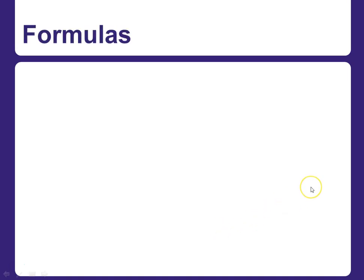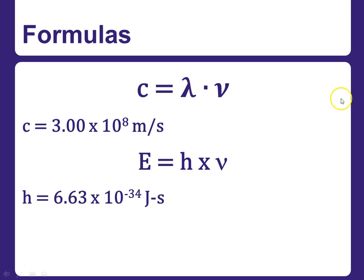So first of all, let's recall our formulas. We have two formulas that we're going to be using. The first one, c, the speed of light, is equal to lambda, the wavelength, times nu, the frequency. Remembering that our c is a constant, 3 times 10 to the eighth meters per second,